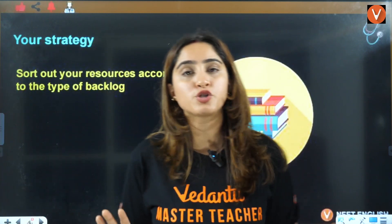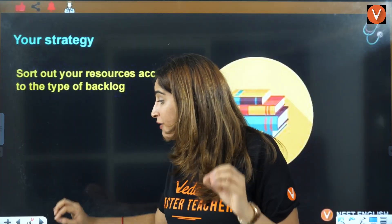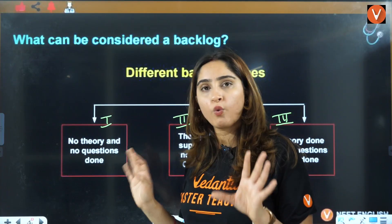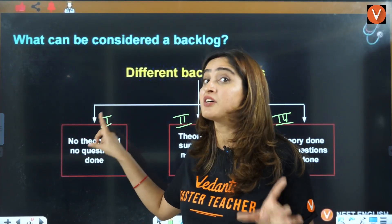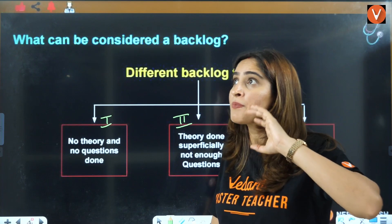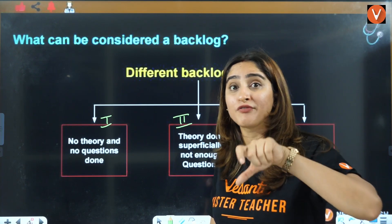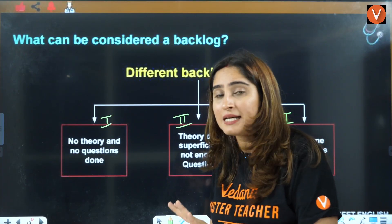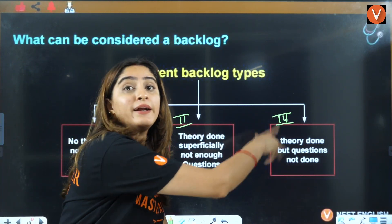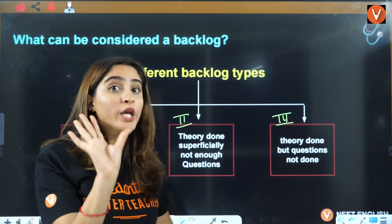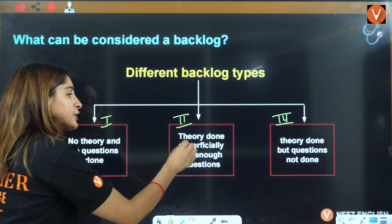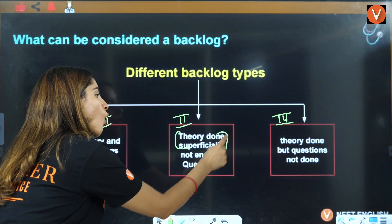Your resources should be set and you should be very smart while picking them. When you have no theory and no questions done: go through the teacher's lecture first, then NCERT. For organic chemistry, inorganic chemistry, or bio, read NCERT thoroughly. For physical chemistry and physics, practice questions as much as possible. When your theory is good but questions not done, give it one or two days — revise theory for one or two hours, then do as many questions as possible.